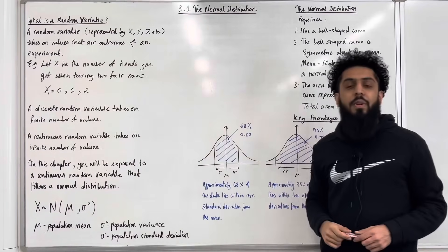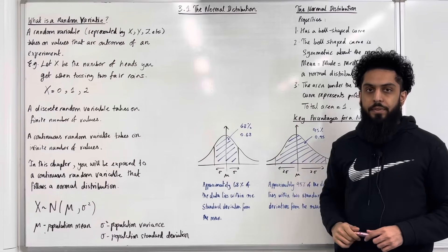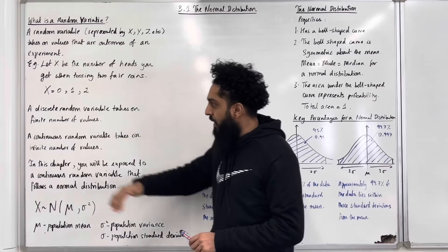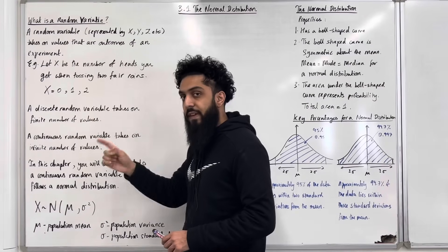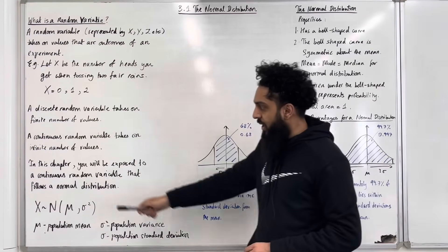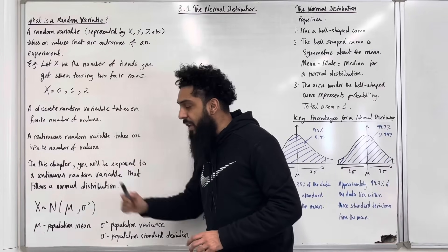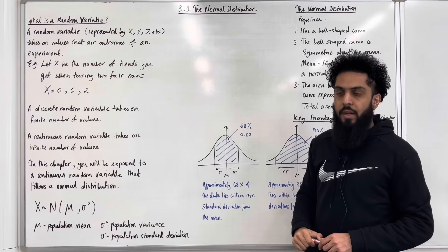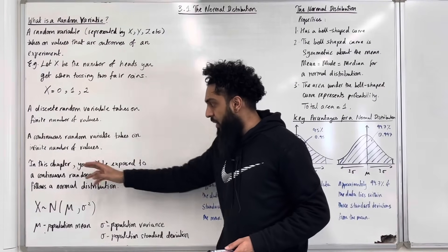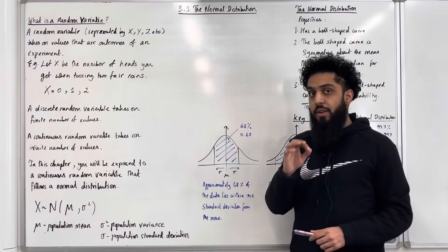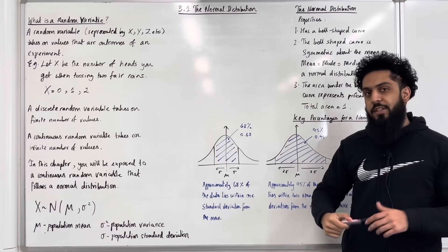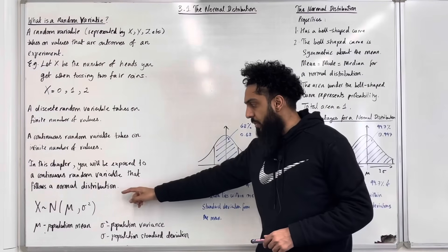A random variable can be discrete or continuous. A discrete random variable takes on a finite, fixed number of values. A continuous random variable takes on an infinite number of values. In this chapter you'll be exposed to a continuous random variable that takes on a special distribution.